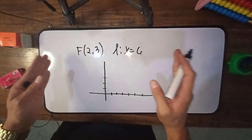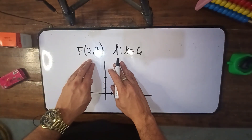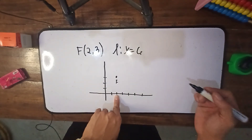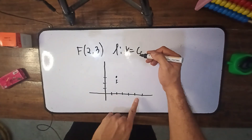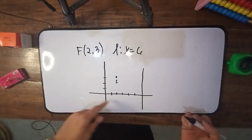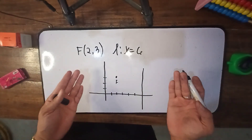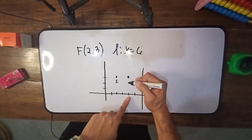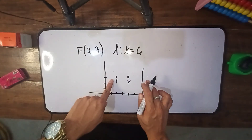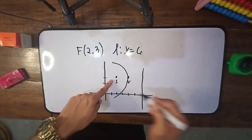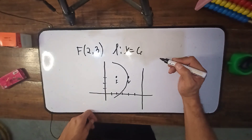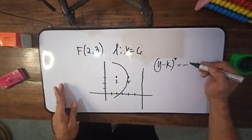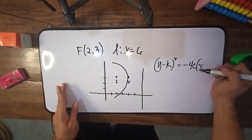This time, the focus and directrix is given. The focus is at 2 comma 3 and the directrix is x equals 6. Plot muna natin ang focus: 2 comma 3, nandito yun. And the directrix is x equals 6 — a vertical line passing through positive 6. Walang vertex tayong nakalagay dito, but the vertex is actually at the middle of the two, so nandito nakalagay ang ating vertex. Kung itong vertex, nandito yung focus at ito yung directrix, ibig sabihin naka-open siya sa left. Kung ang directrix ay naka-vertical, gagamit tayo ng (y minus k) quantity squared equals, dahil open sa the left papunta sa negative infinity, so gagamit tayo ng negative 4c times (x minus h).